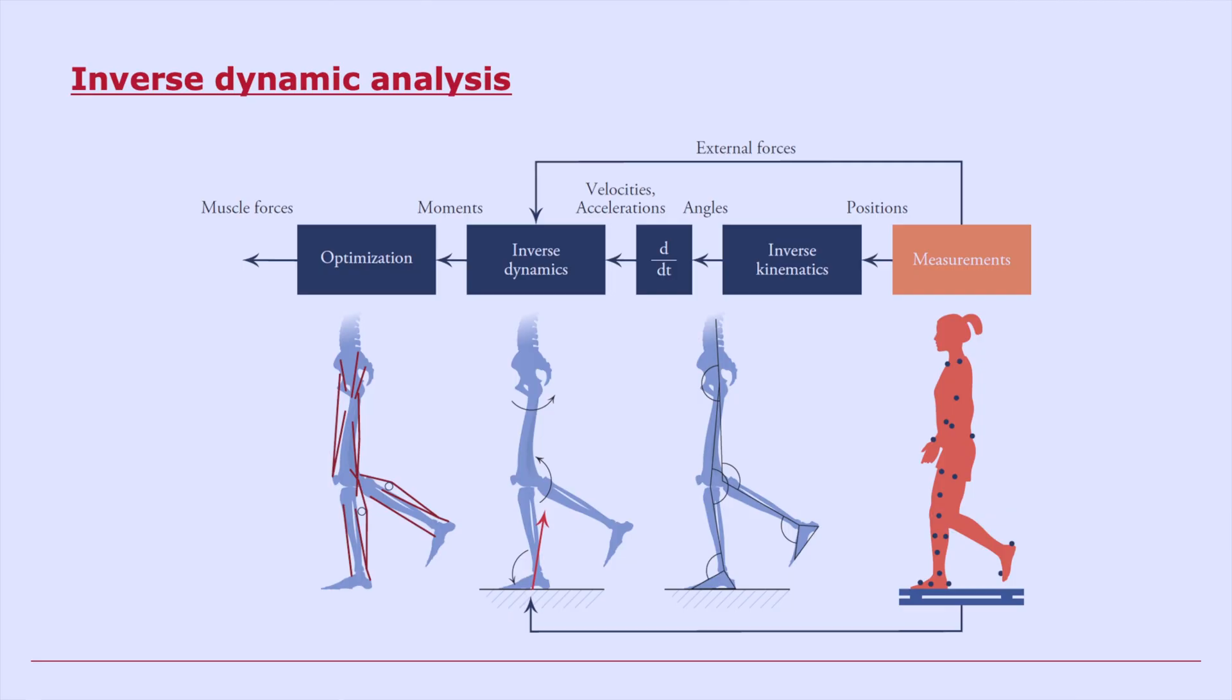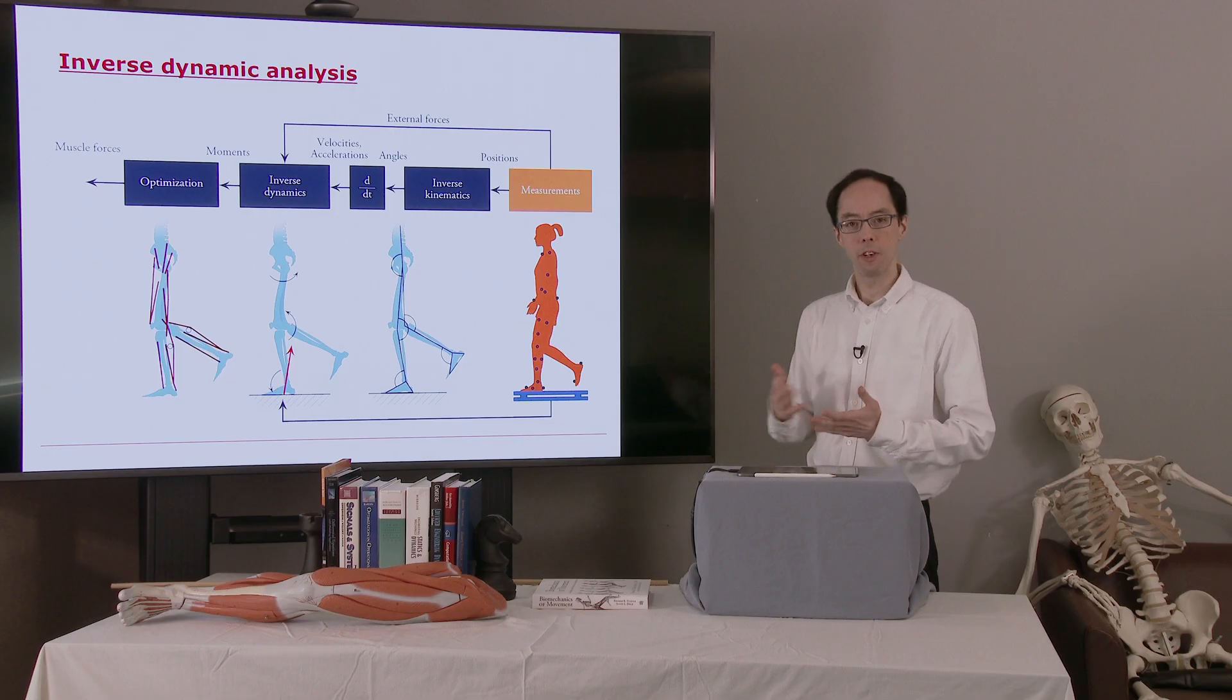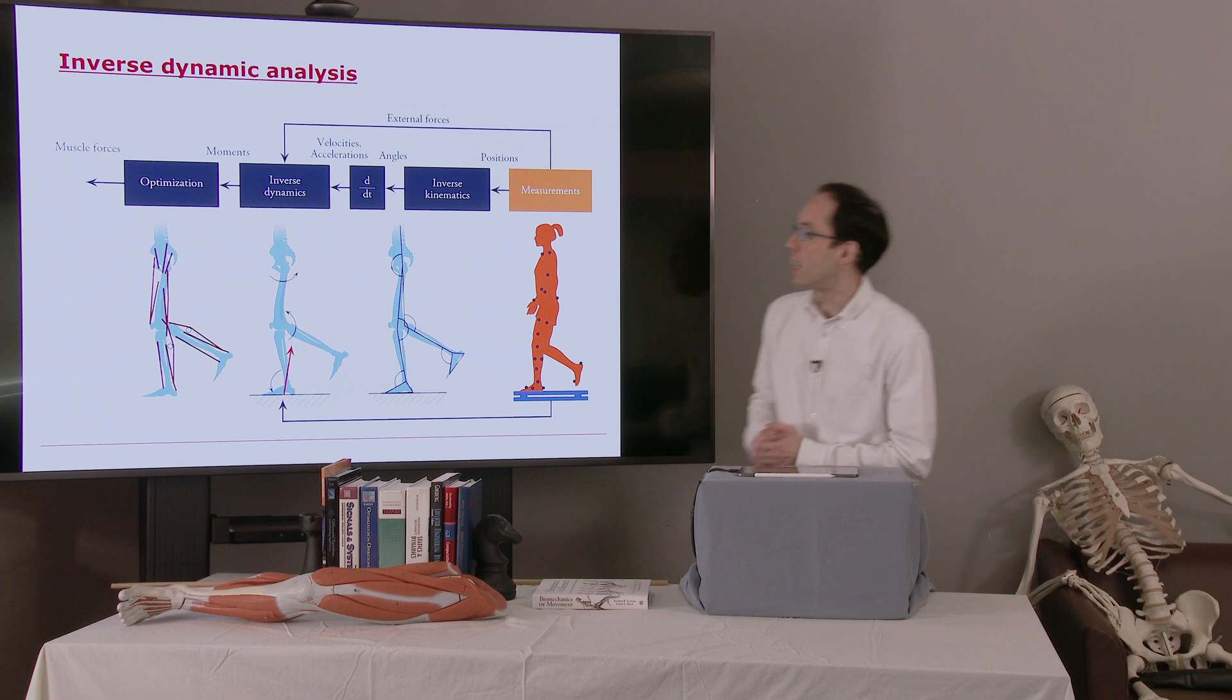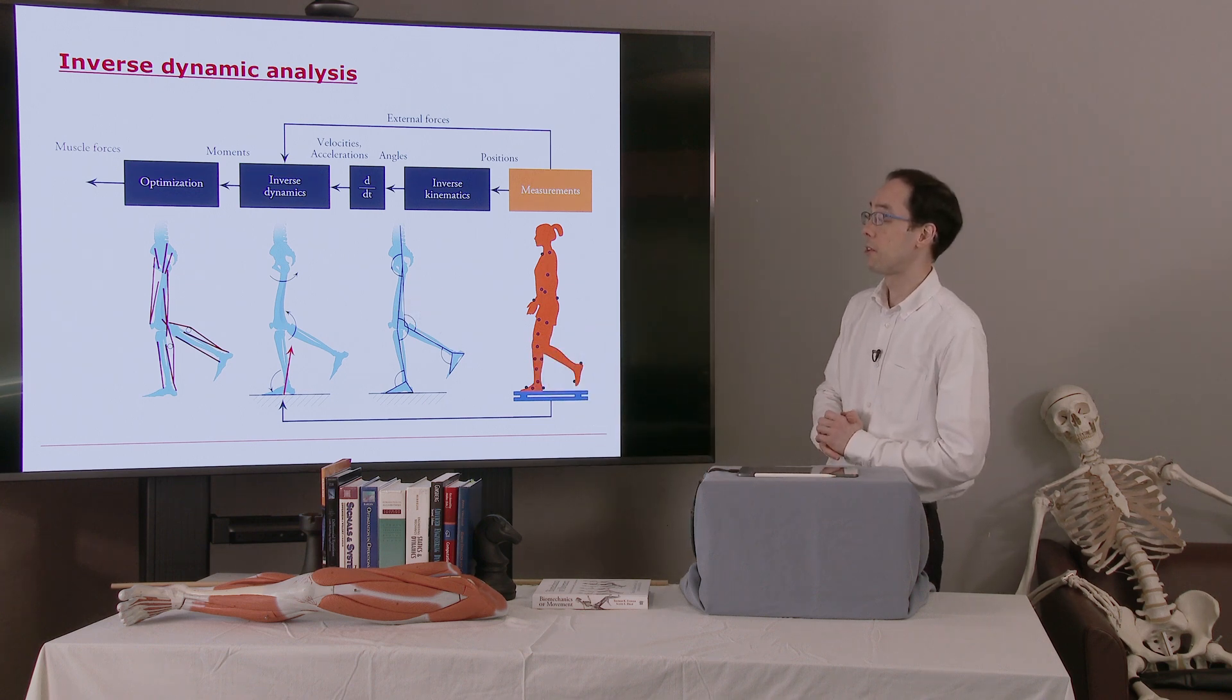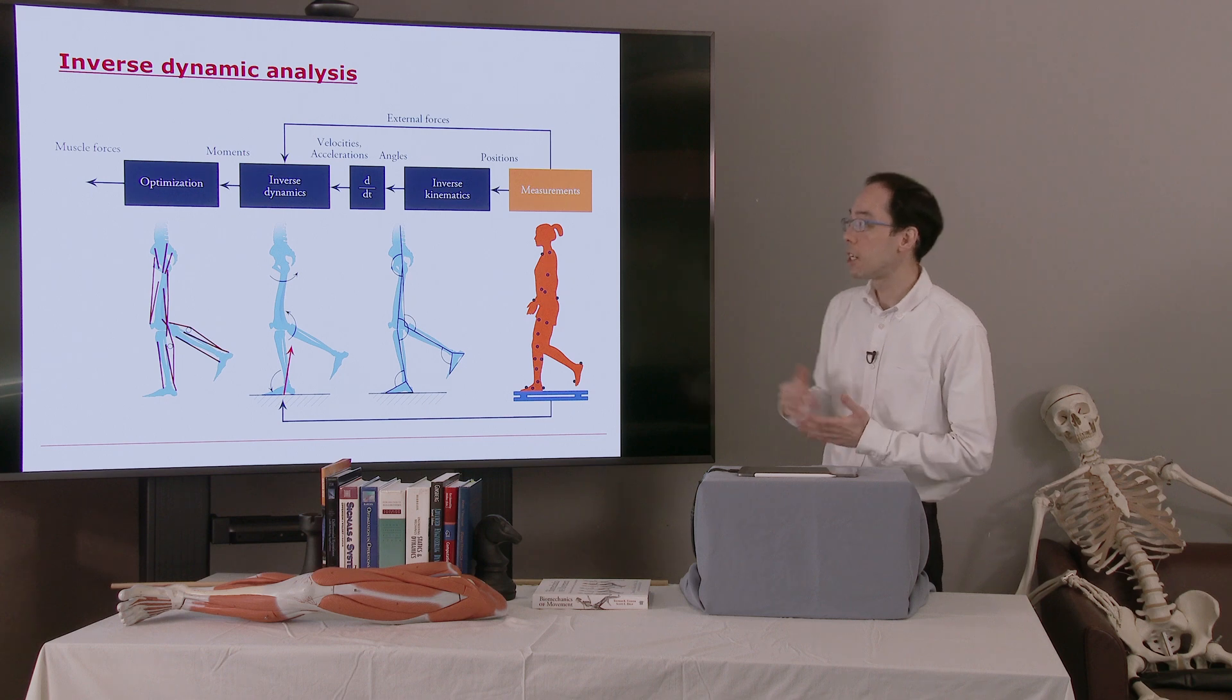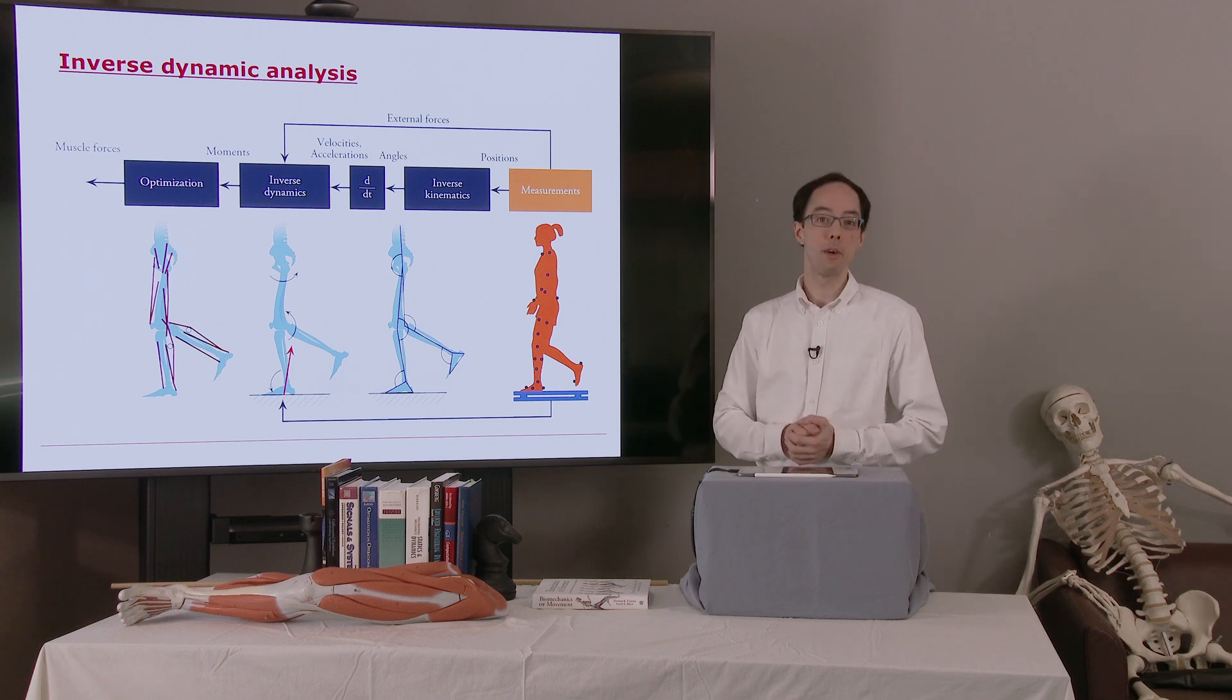So let's refresh our memory for where we are in this inverse dynamic analysis. We brought someone into the lab, collected mocap data. We used the information in chapter 7 to perform inverse kinematics and compute the skeletal joint angles. We did some filtering and differentiation. And then in chapter 8, we saw inverse dynamics to compute the net joint forces and moments. Now we're going to use optimization to estimate the muscle forces. And why do we need optimization?